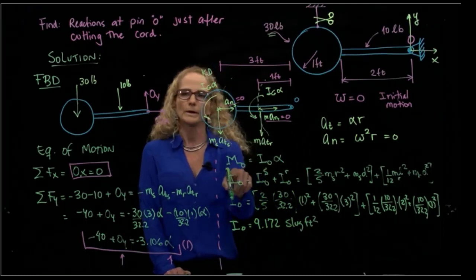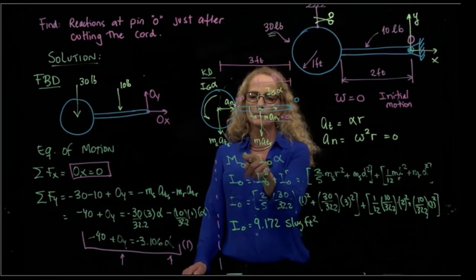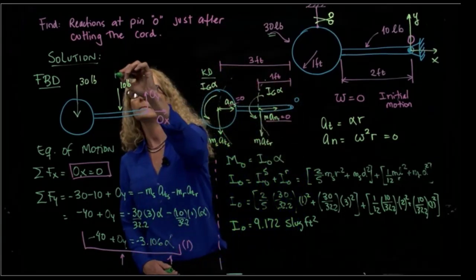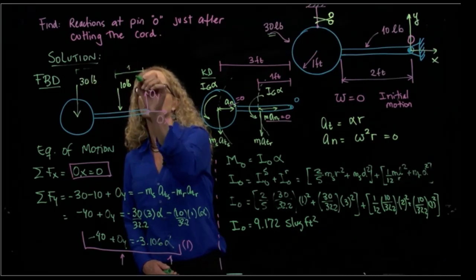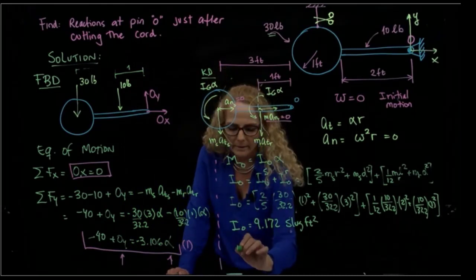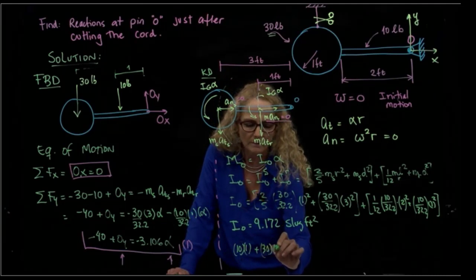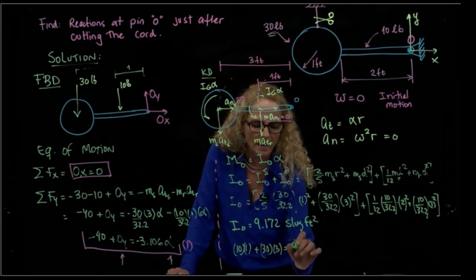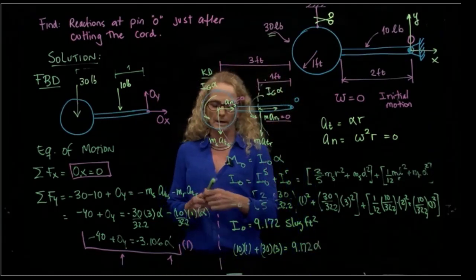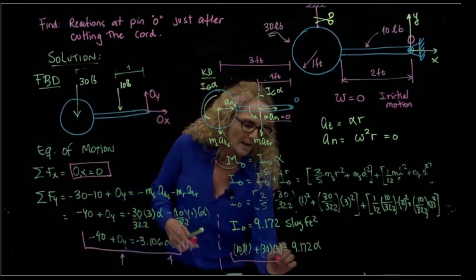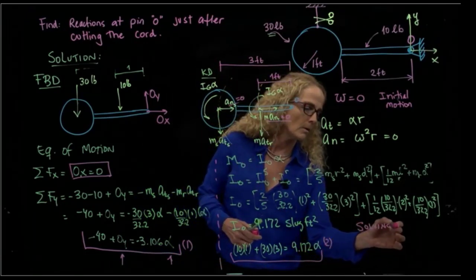Then I can write my equation. The external forces that do moment with respect to point O are this weight located at one and this weight located at three. So that will be 10 times one plus 30 times three equals 9.172 times alpha, which is my angular acceleration. That's my second equation.